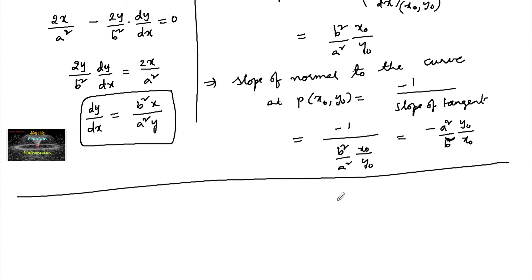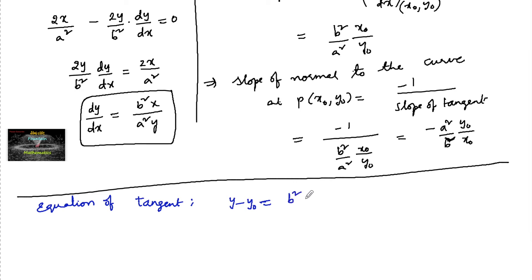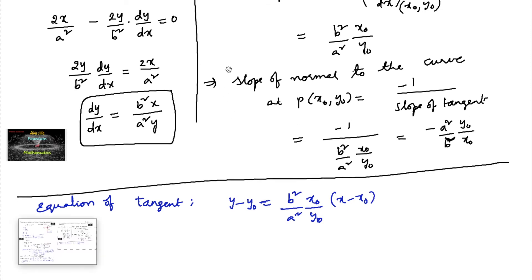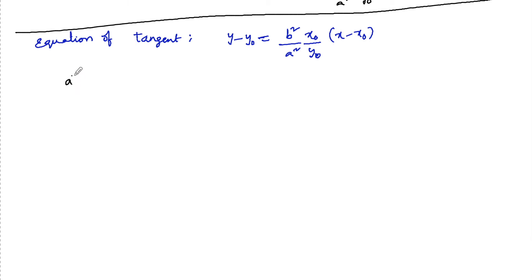Now let's find the equation of tangent. The equation of tangent can be written as: y minus y₀ = (b² / a² × x₀ / y₀) × (x minus x₀). Cross multiplying: a² y₀ y minus a² y₀² = b² x₀ x minus b² x₀².